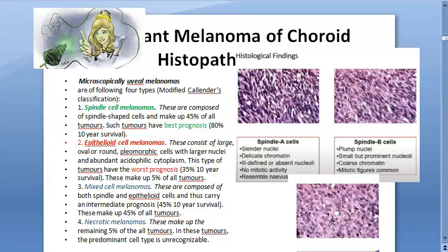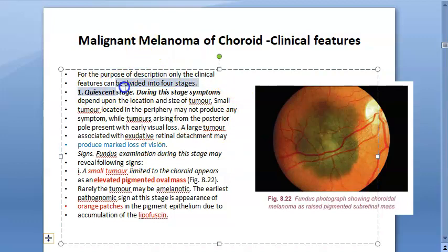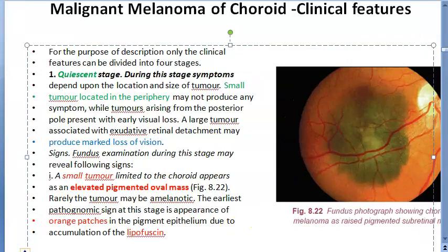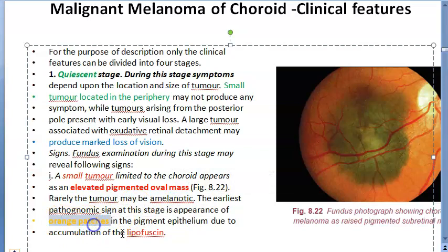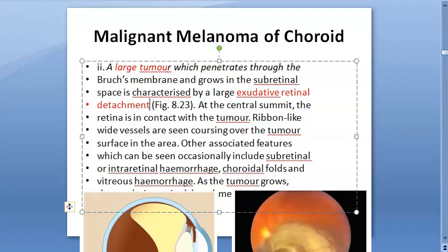The stages of malignant melanoma begin with the quiescent phase. In the quiescent stage, there is a small tumor, usually in the periphery, so it does not affect vision much. Characteristically, you see orange patches in the pigment epithelium due to accumulation of lipofuscin — this is the melanotic appearance in the quiescent stage.